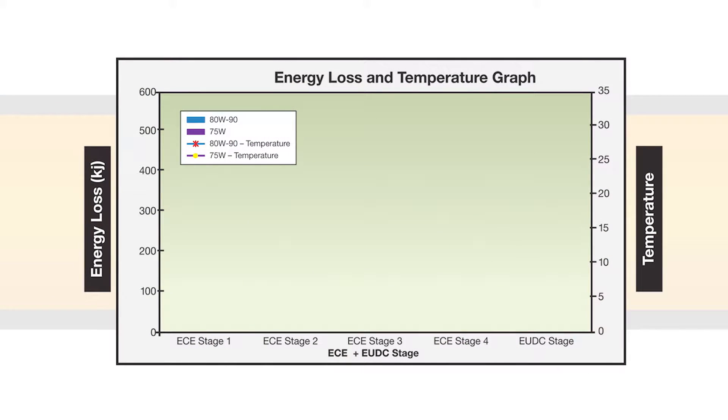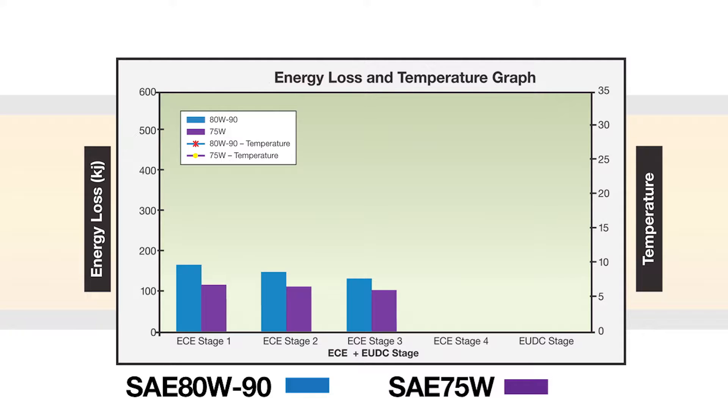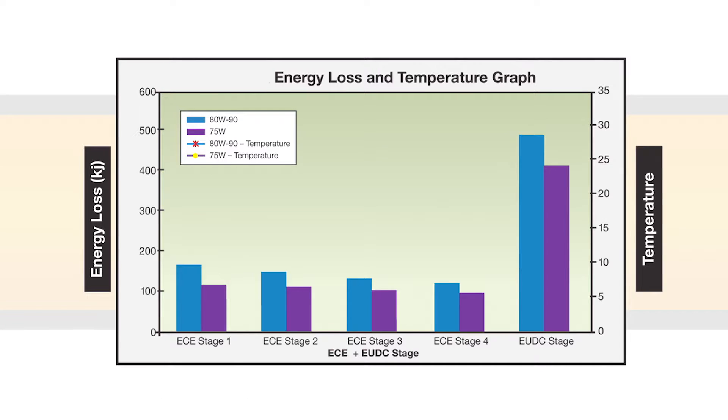We compared two transmission oils, one in SAE 80W90 and the other a 75W. The efficiency chart shows the energy loss for the two oils as they complete each of the ECE and EUDC cycles.